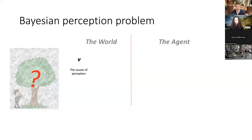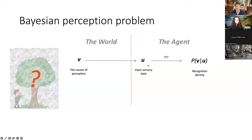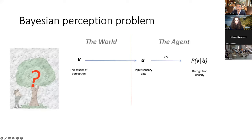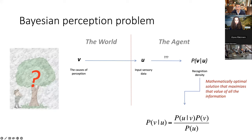The basic problem is this: we receive some sort of sensory data, and we're assuming that there is something out there in the world which are the causes of our perception. According to Kant, we can't really say much about this at all. But what we do get is sensory data - U is some sort of large vector of sensory data. The problem for the agent is that we have to form something called the recognition density, which is the probability distribution of what are the causes of my sensory data given my sensory data.